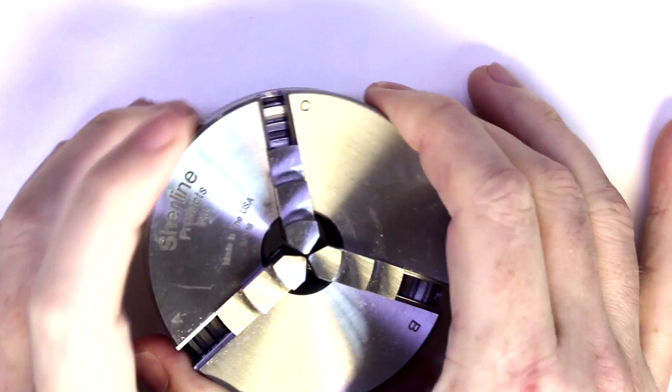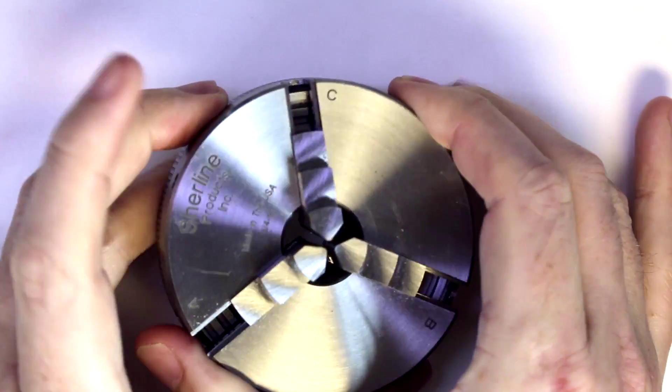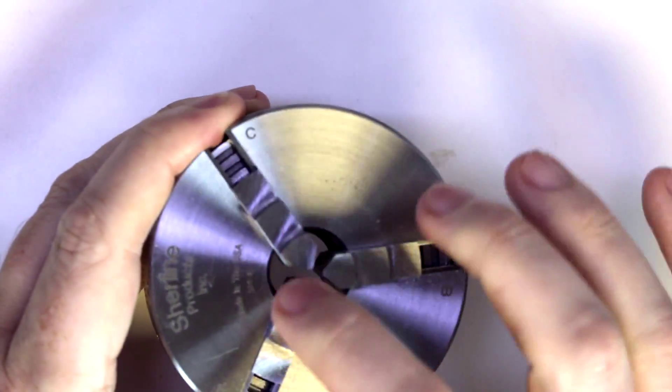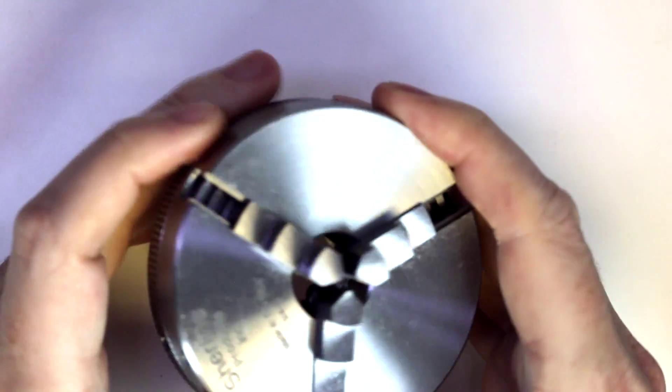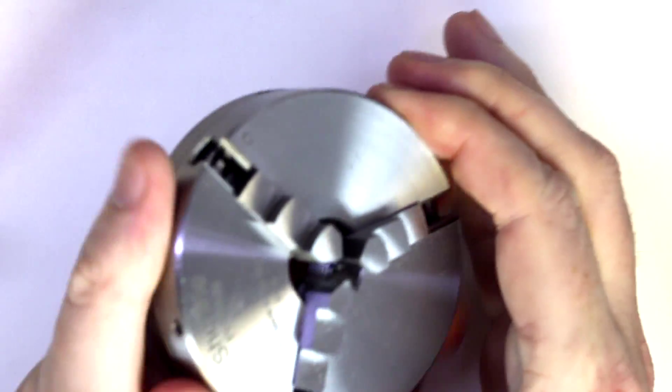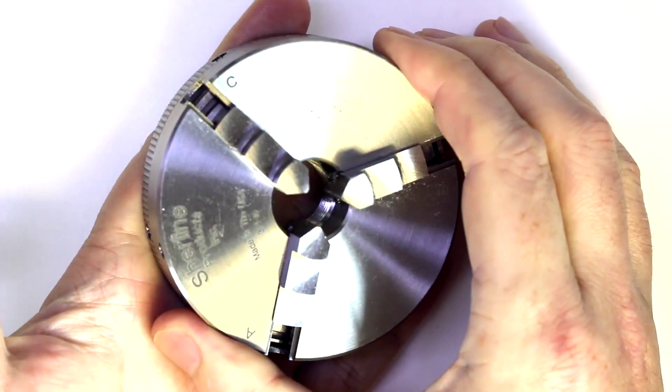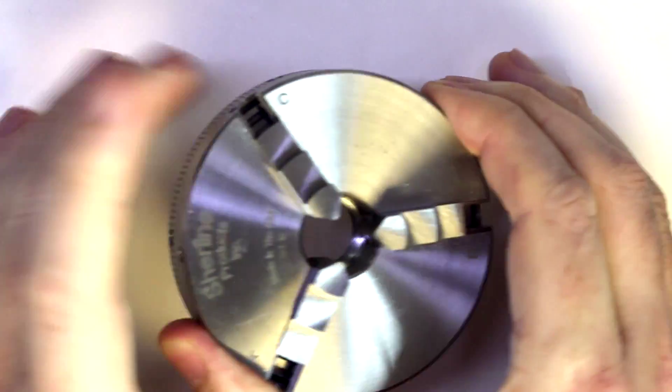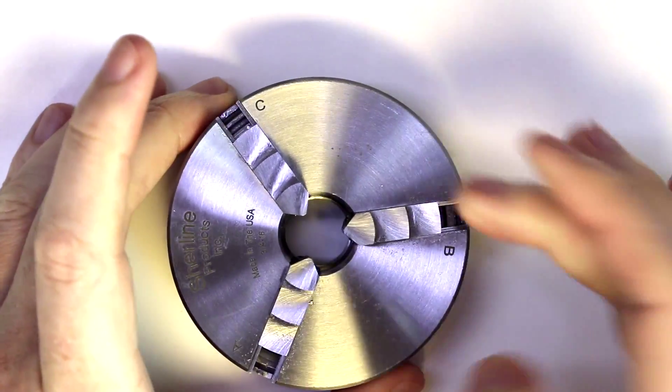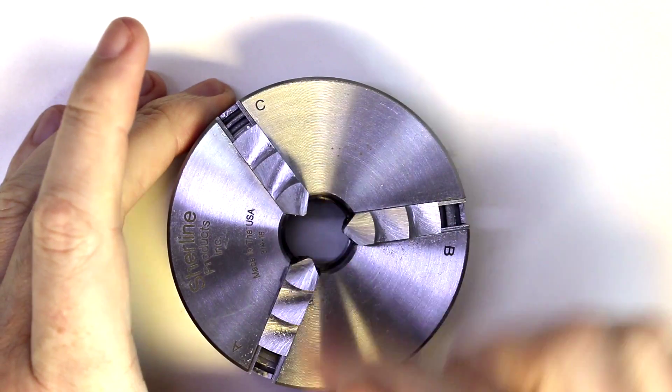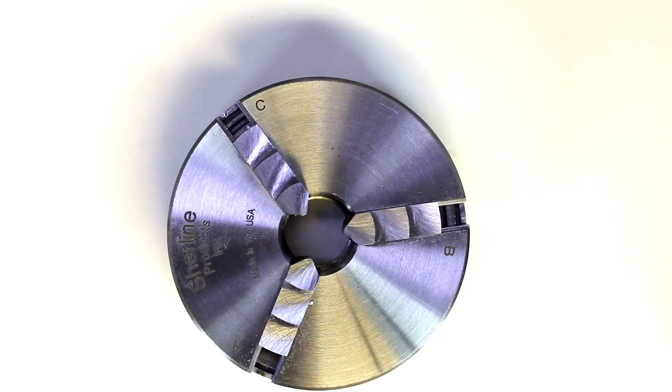Now the reason it's called a three-jaw is simply because it has three individual jaws on it. These jaws all move at the same time. As we scroll open the chuck, we'll see that all three jaws move at an identical time. They're not individually adjustable, so we can't move one of these jaws in while the other two remain fixed.